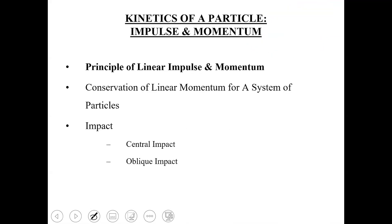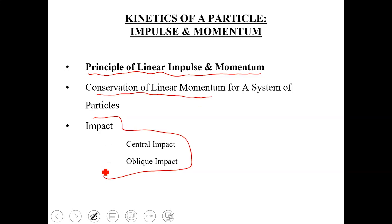The topics we are going to cover in this chapter are shown here. Today we start with the principle of linear impulse and momentum. Tomorrow we will talk about conservation of momentum, and next week we will cover impact — two types: central impact and oblique impact. By next week your impulse and momentum chapter will be finished, and then we move on to the dynamics of a rigid body.